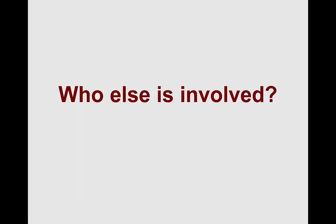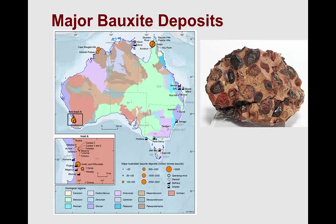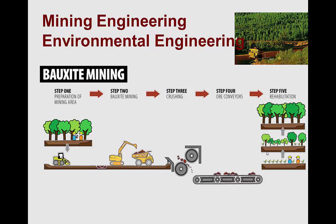Who else is involved in the development of the can? Let's trace the aluminum. Most of the aluminum used in the world today comes from just a few places. There are major bauxite deposits in Australia. Bauxite is one of the primary sources of aluminum — it's a mineral aggregate with all kinds of different components. We've got to get it out of the ground and turn it into aluminum and then into cans. The folks involved in mining the aluminum are mining engineers and environmental engineers.